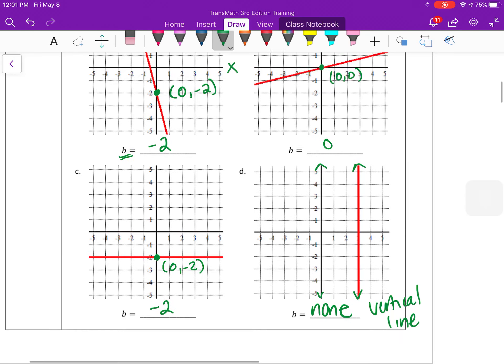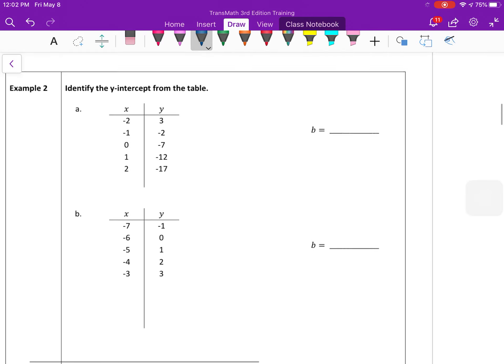So notice these points. So when identifying the y-intercept, it's always 0, something y. So it's on the y-axis. So if you're looking for the y-intercept in the table, you need to find where the x is 0. And then the y-intercept is the pair that goes with that 0. So the y-intercept in this one would be negative 7. That means that the line would cross at 0, negative 7 down here.